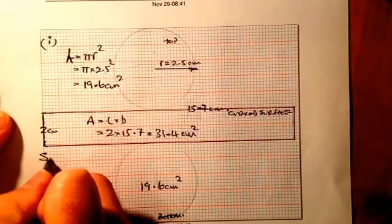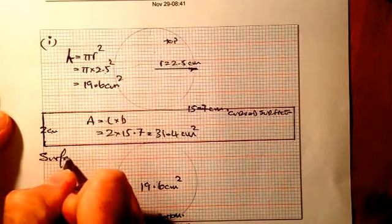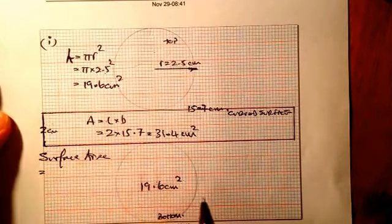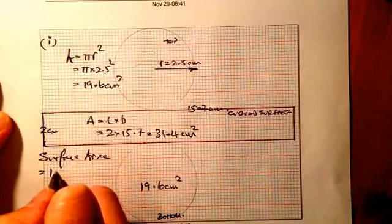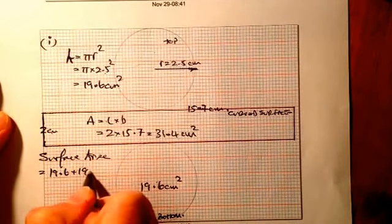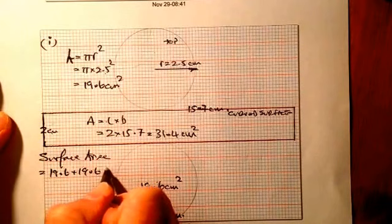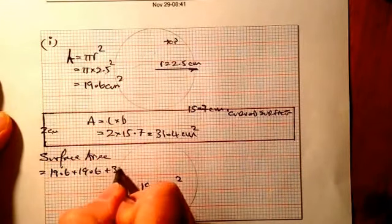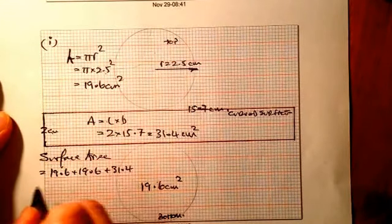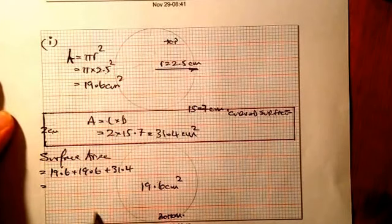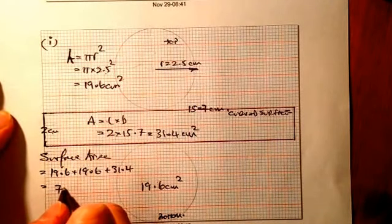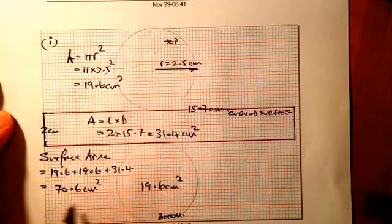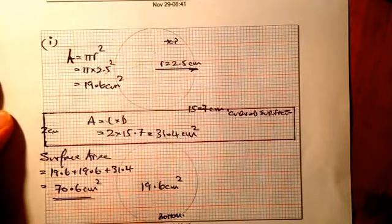For the surface area, adding up the three parts: 19.6 plus 19.6 plus the curved surface 31.4 gives 70.6 centimetres squared. That's my surface area — that was part two.